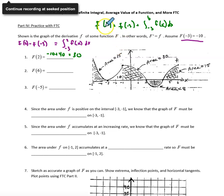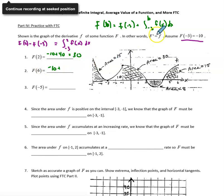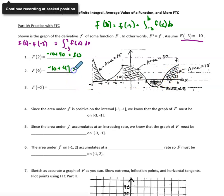Plugging in b equals 6, I want big F of 6. I take big F of negative 3, which was negative 10, and add the integral from negative 3 to 6. I have 10 plus 30 equals 40, minus 8 because it's the integral, so that's 32 plus 15, adding the integral equals 47. So big F of 6 must equal 37.